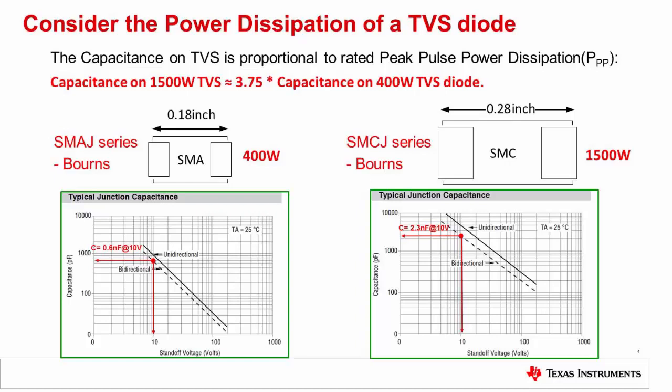One thing to keep in mind when using TVS diodes for input protection is the power rating. Selecting a TVS diode with a higher power rating will increase the size of the device. In addition to allowing for more power dissipation, the larger device will also have more capacitance. For example, the TVS diode with a 1.5 kilowatt peak pulse power rating has 3.75 times more capacitance than the 400-watt device. Since we are using a series current limiting resistor before the TVS device, it will not need a very high power rating. As a result, it is generally recommended to use a TVS diode with a low power rating for input protection, as the lower capacitance will have less of an impact on distortion.